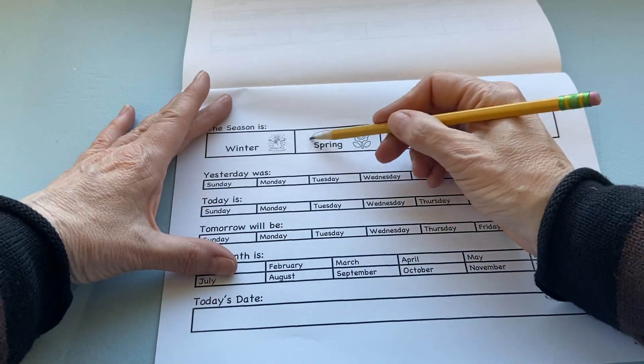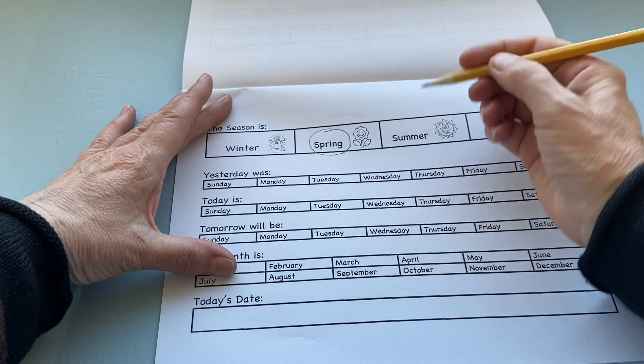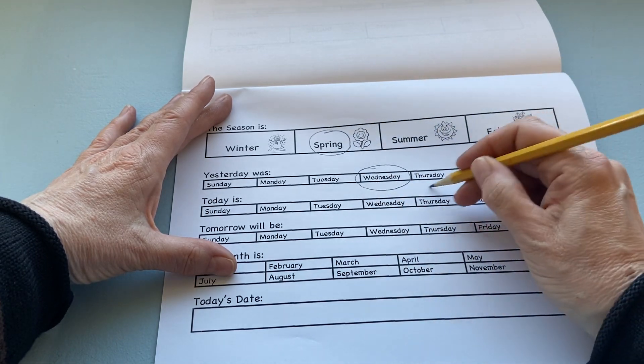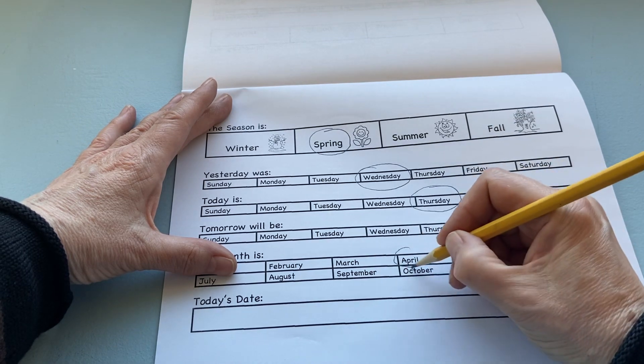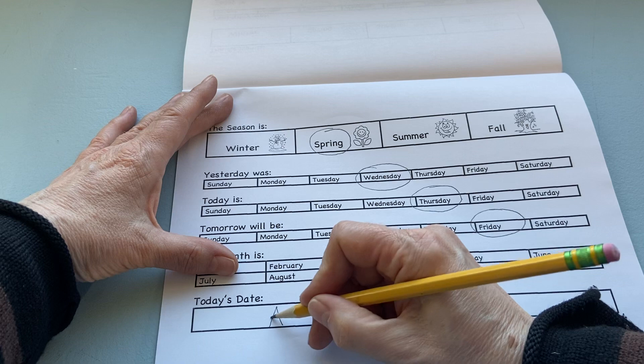The season is spring. Yesterday was Wednesday, today is Thursday, tomorrow will be Friday. It is April. We're going to write today's date.